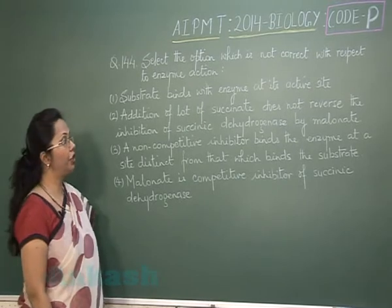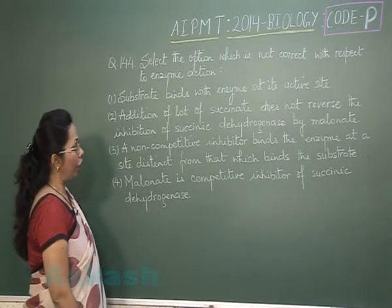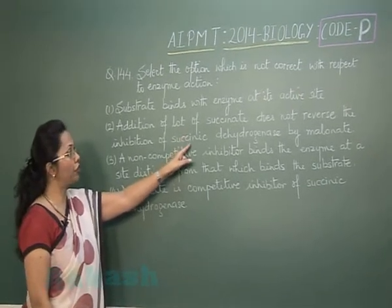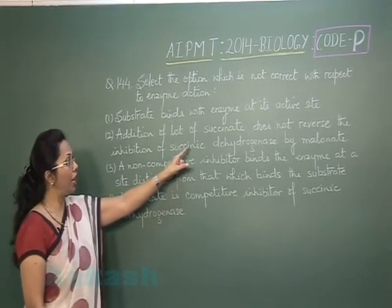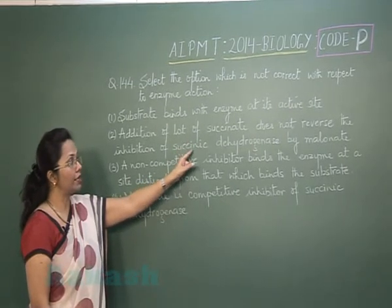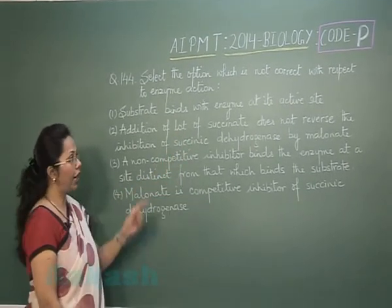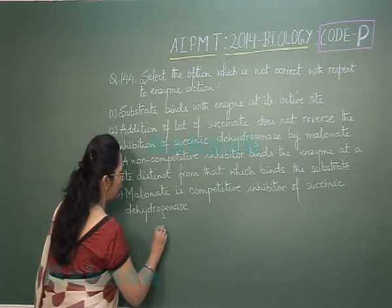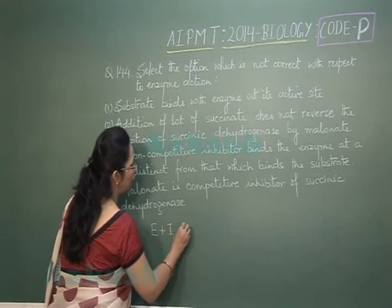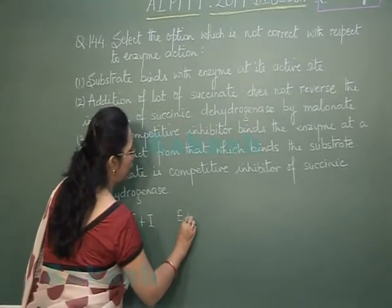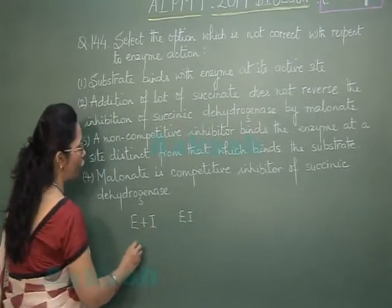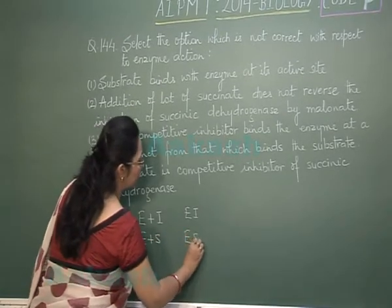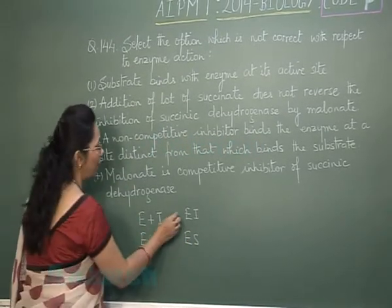In this case, succinic dehydrogenase is an enzyme for which the substrate is succinate. However, malonate can bind to the enzyme — malonate is the competitive inhibitor. So in this case, enzyme plus inhibitor form an enzyme-inhibitor complex instead of the usual enzyme-substrate complex.